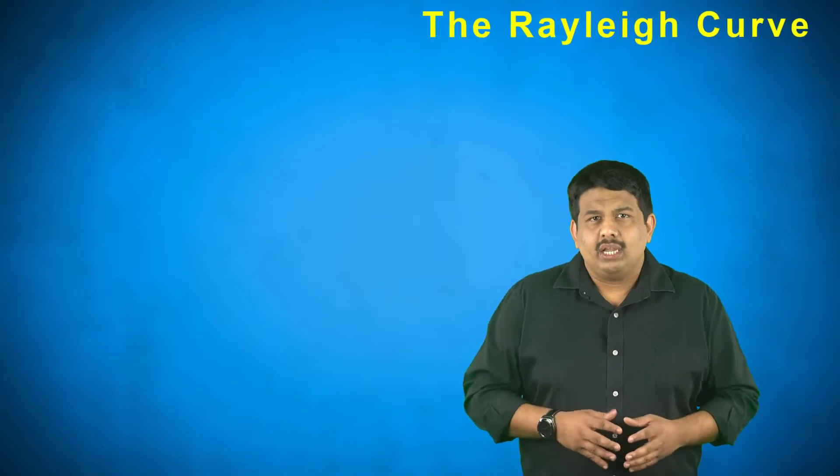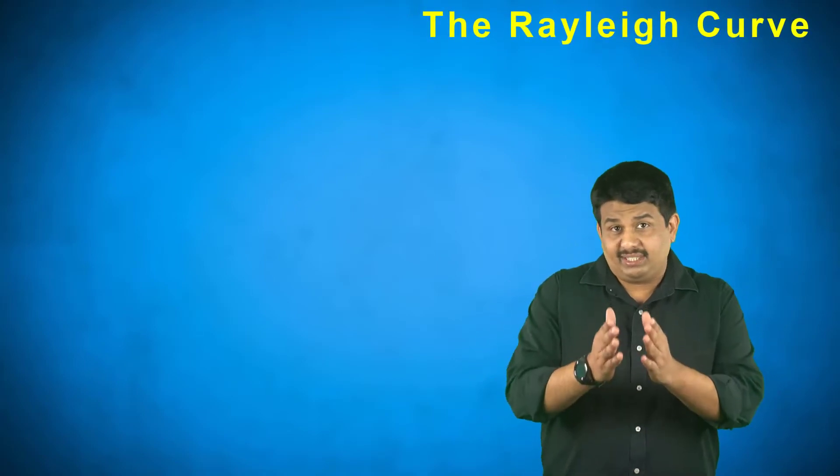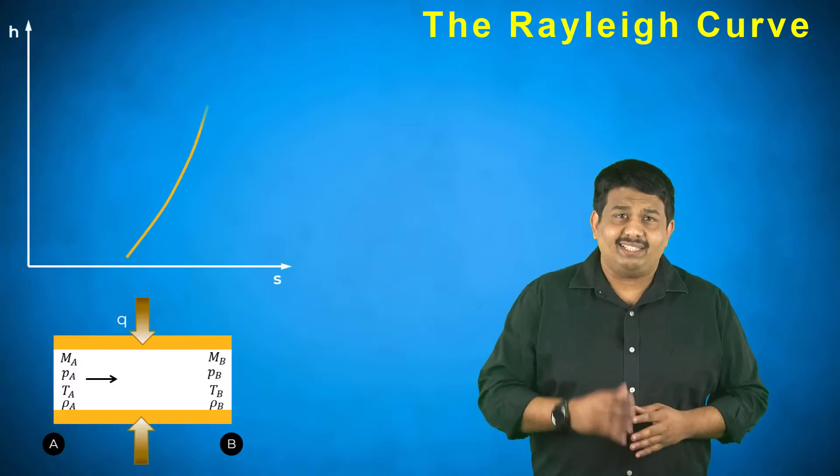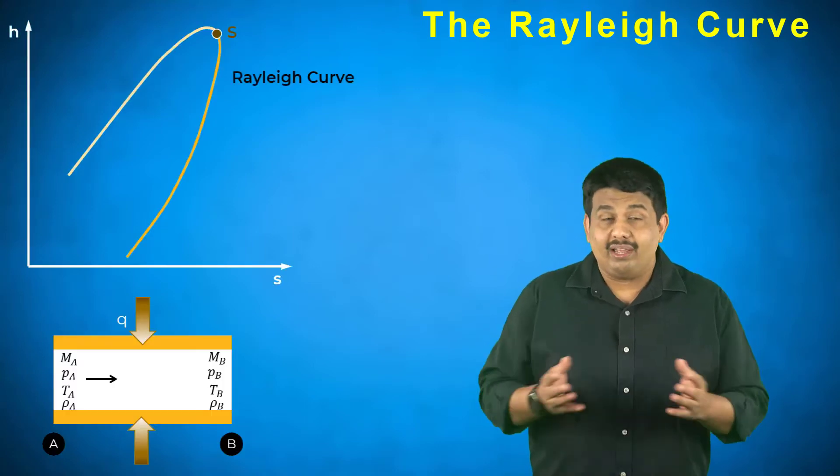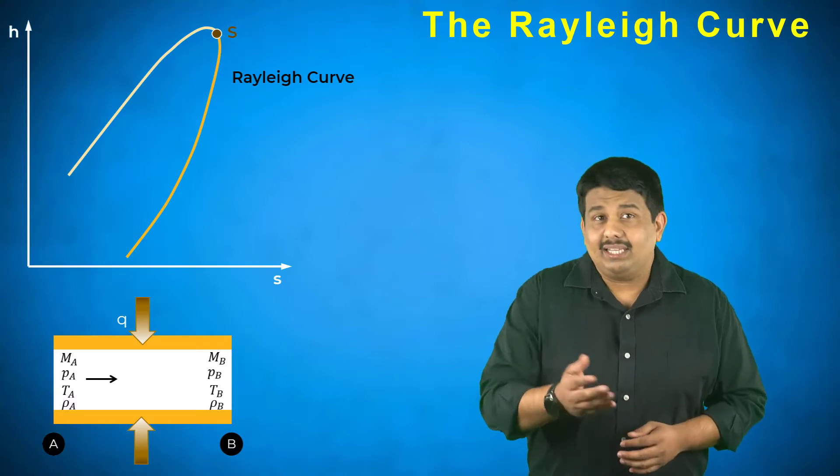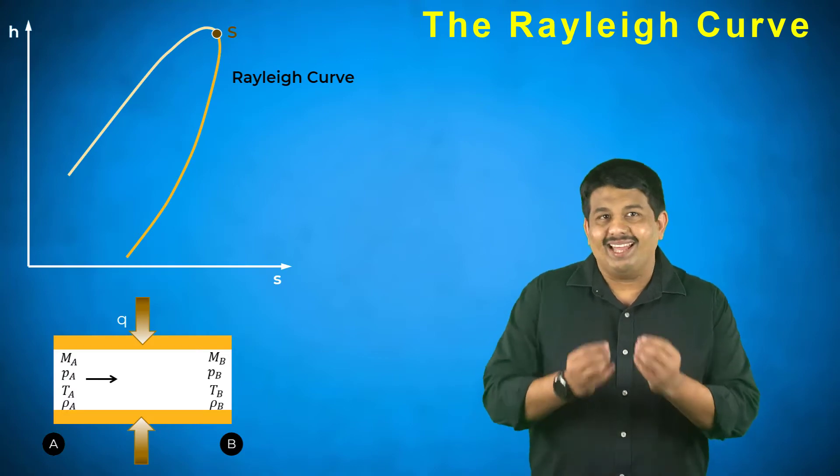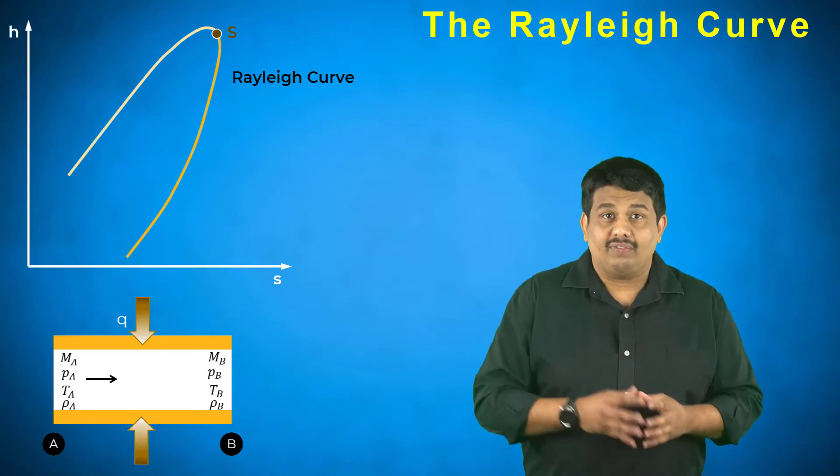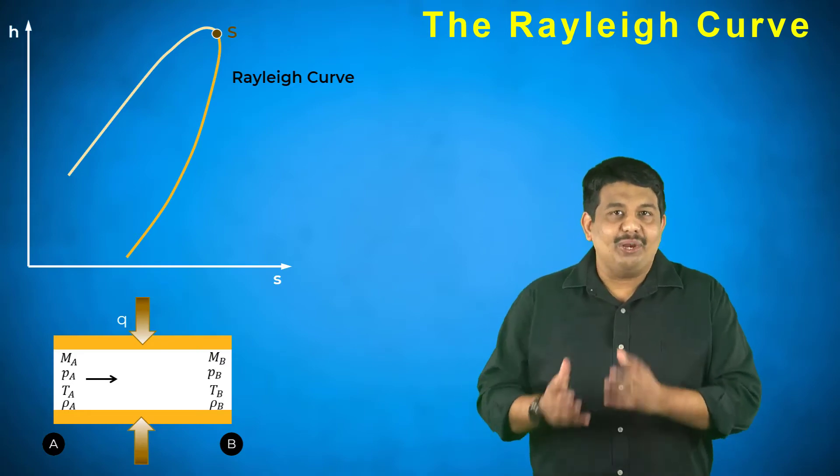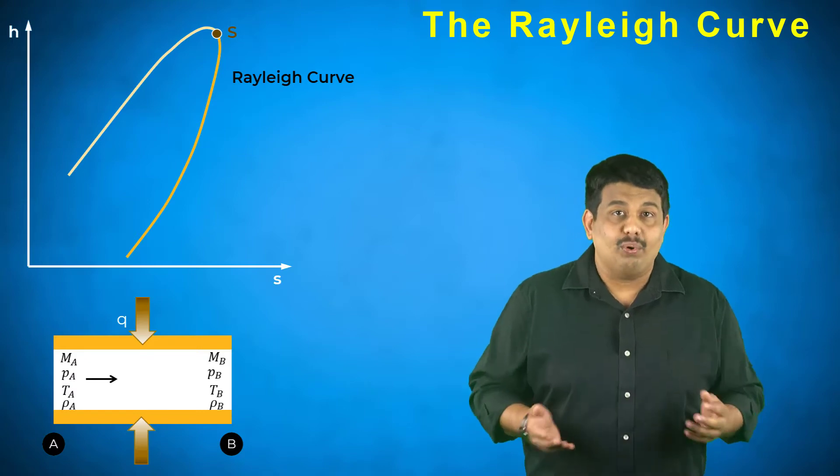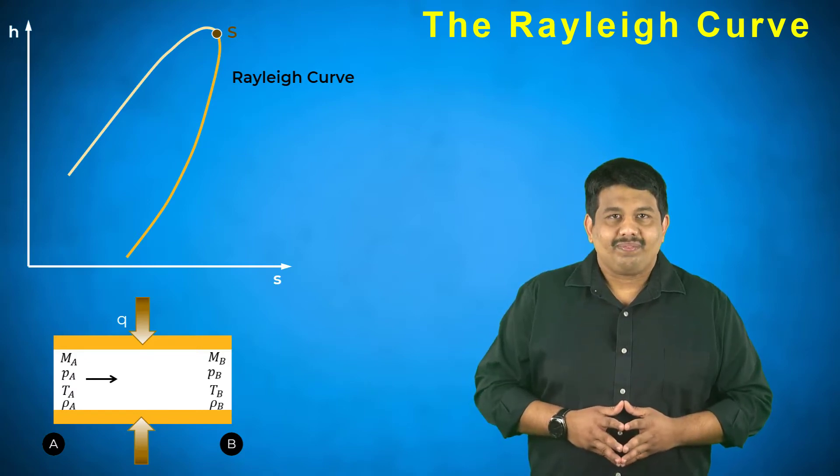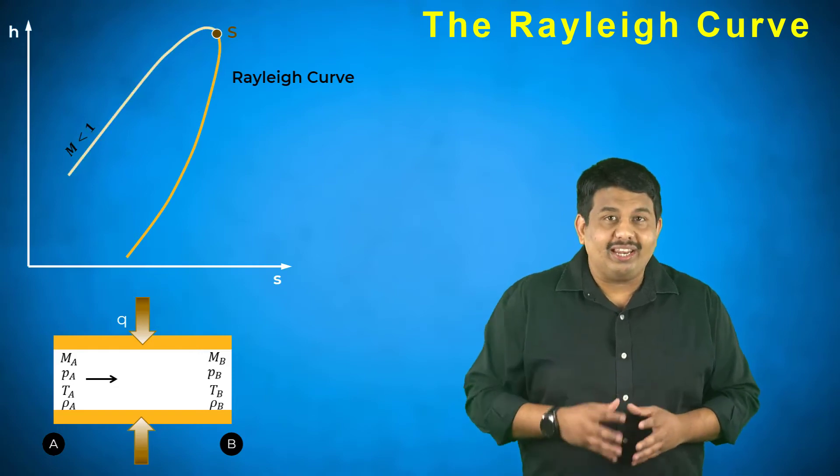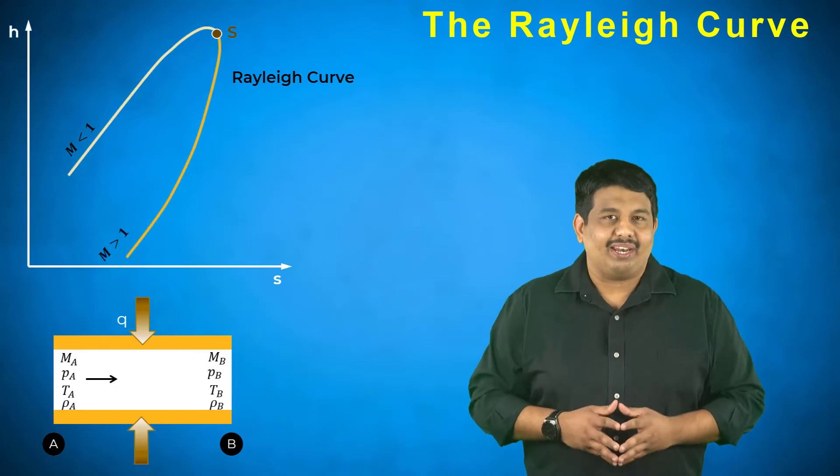Let us use these ratio equations to understand some physical trends in such flows. To do this, for a set of initial conditions in region A, we will plot the locus of all possible states in region B on a Moeller diagram. This curve is commonly called the Rayleigh curve. Each point on the curve corresponds to a different value of Q added or removed from this flow.